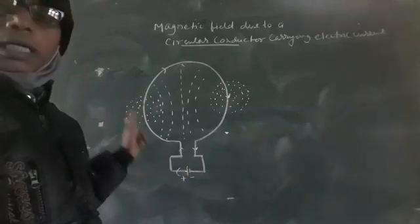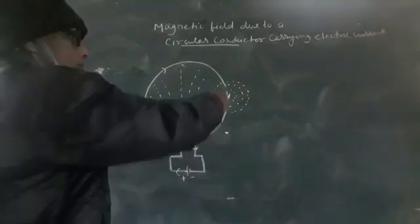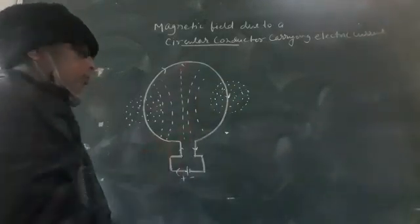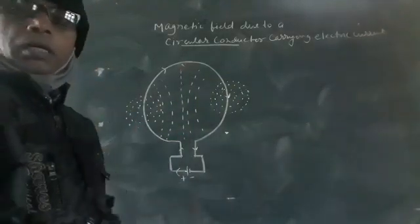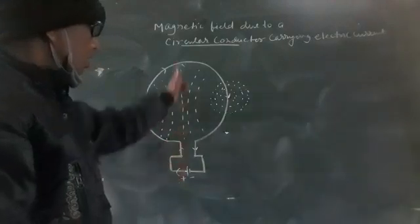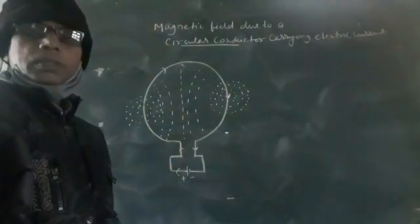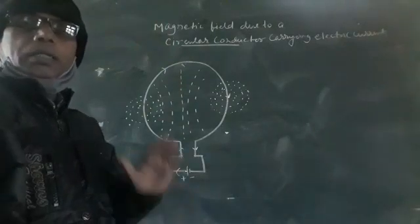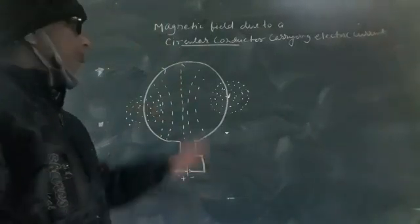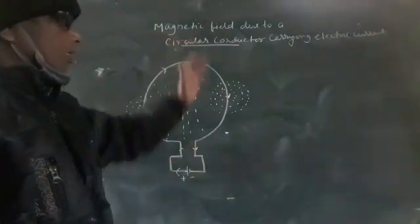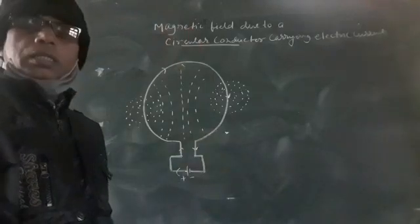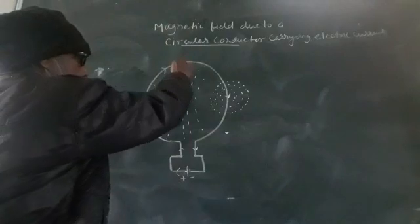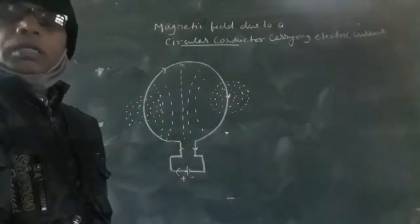And in the middle of the coil, on the paper, it becomes a straight line, which shows the nature of the magnetic field. For a circular conductor carrying electric current, the answer will be straight, because the main part of the circle is the center.